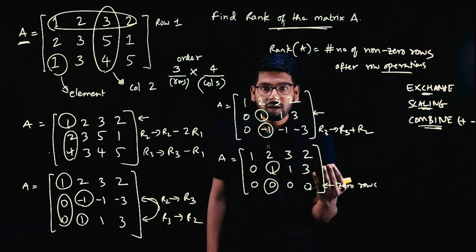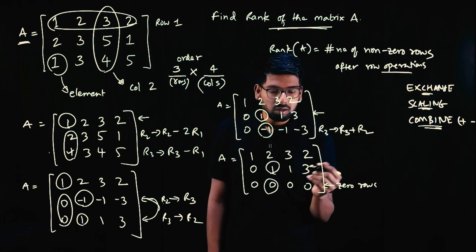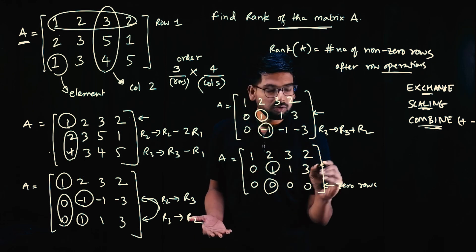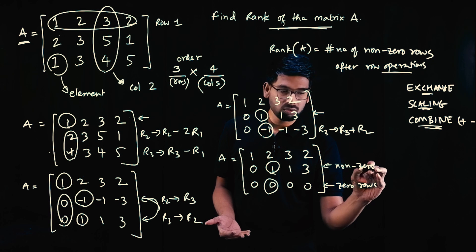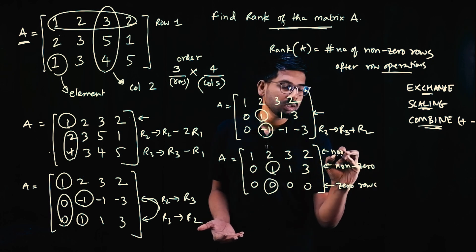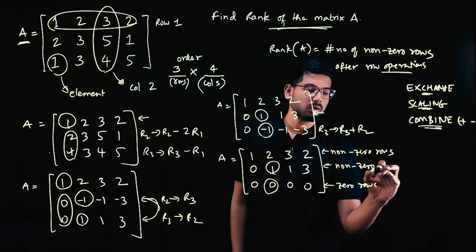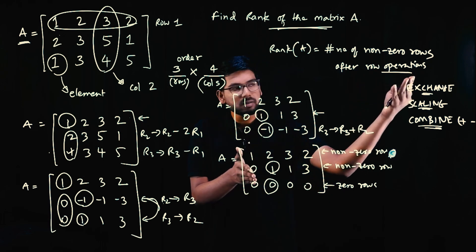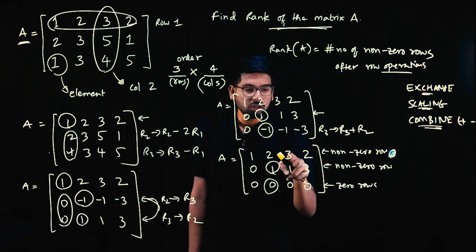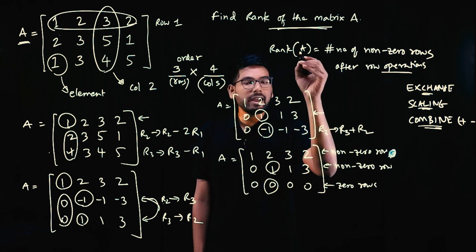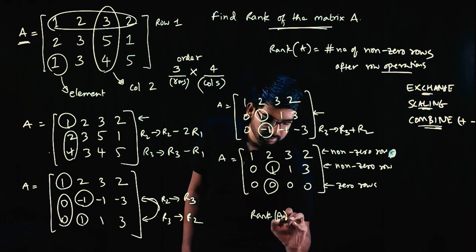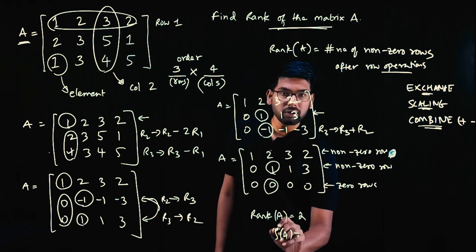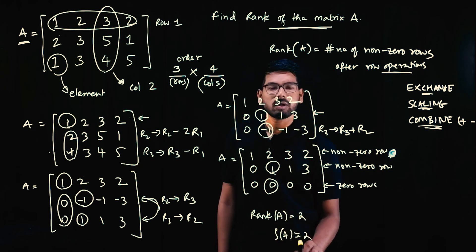After row operations, how many non-zero rows are there? Row 1 is non-zero, row 2 is non-zero, and row 3 is a zero row. So the rank of matrix A is 2. This can also be written using the Greek letter rho: ρ(A) = 2.